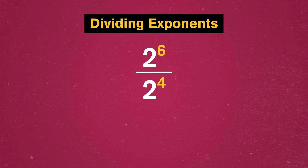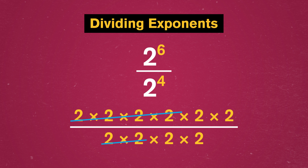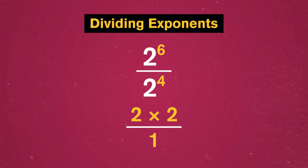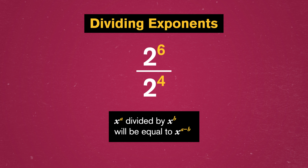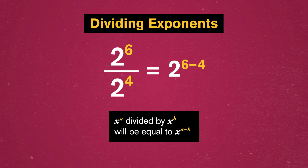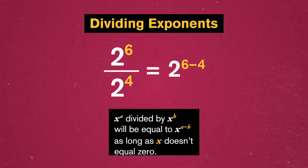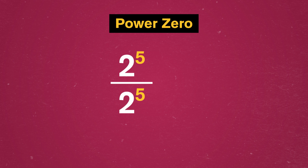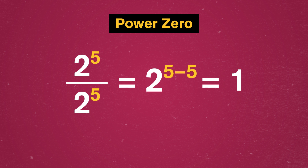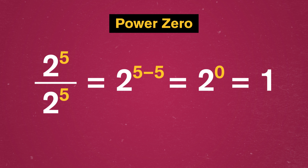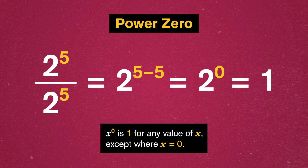So what about dividing powers of two? Let's try writing out two to the sixth divided by two to the fourth. Almost all those twos cancel, leaving us with two times two over one. So maybe we theorize that x to the a divided by x to the b will be equal to x to the a minus b — which works with one very small caveat: if x is secretly zero and we divide by it, we've broken math. So we add 'as long as x doesn't equal zero' to this rule. What's two to the fifth over two to the fifth? Any number divided by itself is one. But with our division rule for exponents, it's two to the five minus five — that is, two to the zeroth power. So x to the zero is one for any value of x, except when x equals zero, where mathematicians are still battling it out. And folding paper can actually help out here too: if you take a piece of paper and fold it half zero times, you have one layer.